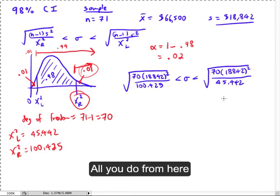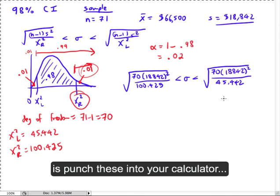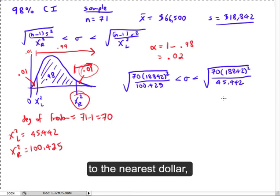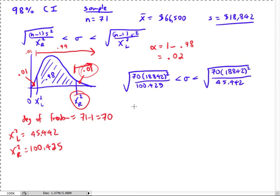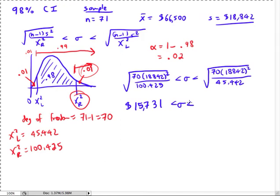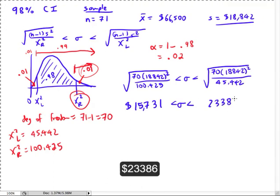And then all you do from here is you punch these into your calculator and see what you come out with. So what I'm getting, if I type in the first one, I'm going to round to the nearest dollar. That's what the instructions asked for. So I'm getting 15,730.955. I'm going to call it 15,731, rounding to the nearest dollar. And then the other one, I'm getting 23,385.5. I'm going to round it up to 23,386.